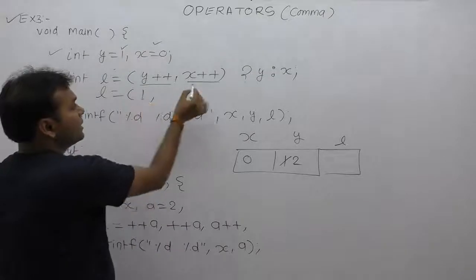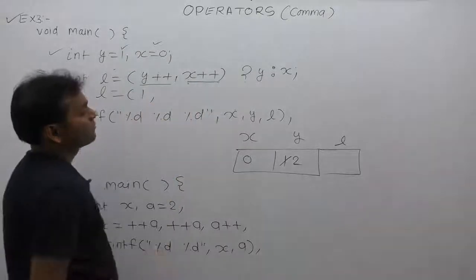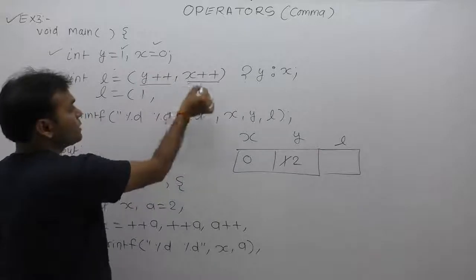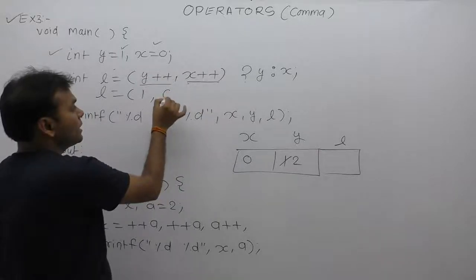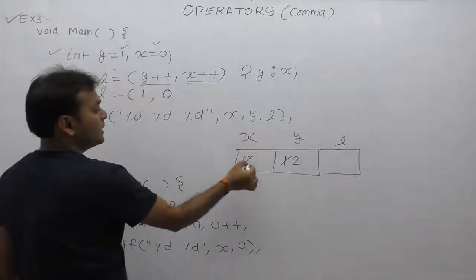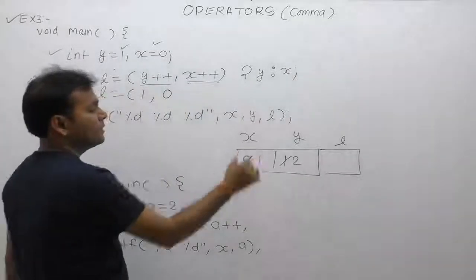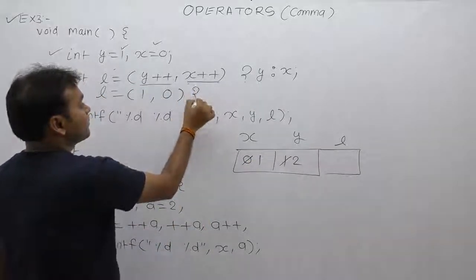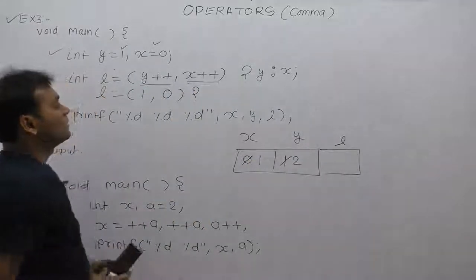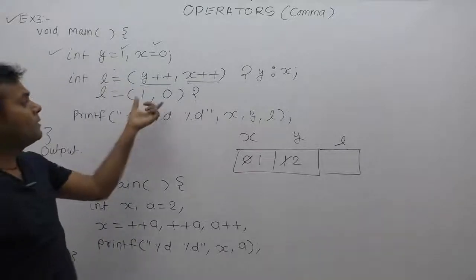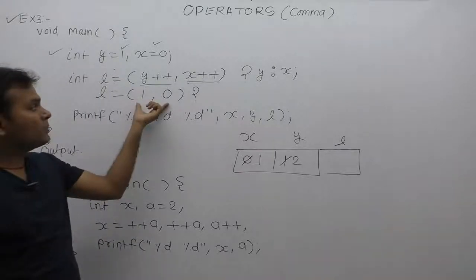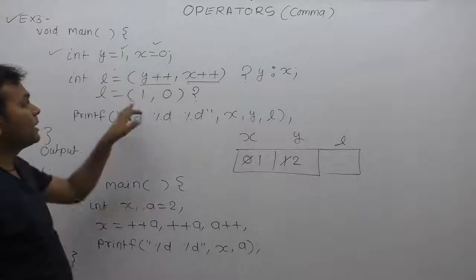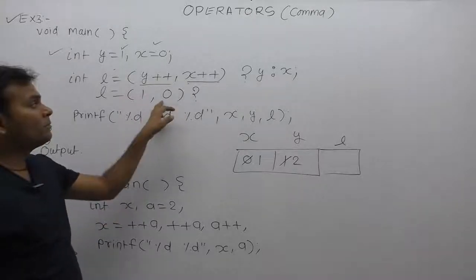Then x++ is evaluated — the current value of x is replaced first due to post-increment, then x is incremented. Under the condition, we have two expressions separated by a comma inside the brackets. The value of the last argument determines the result.